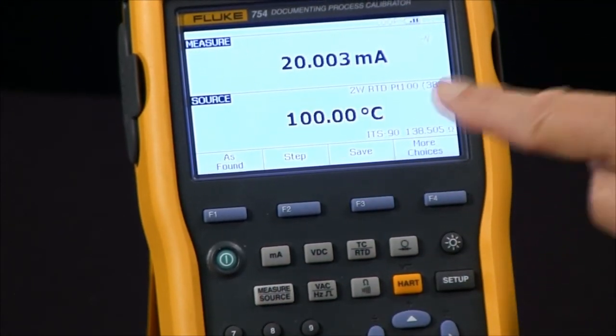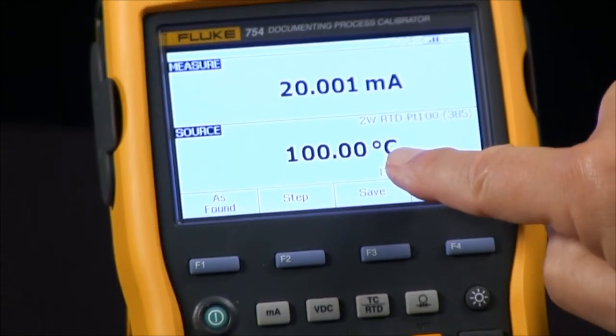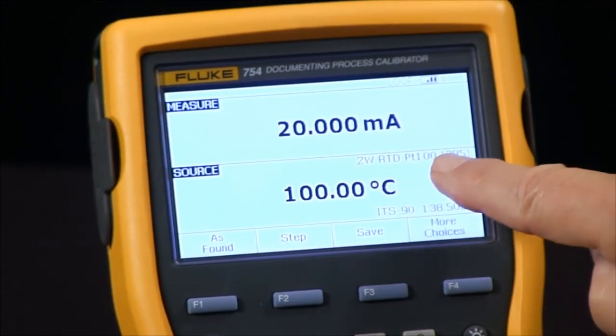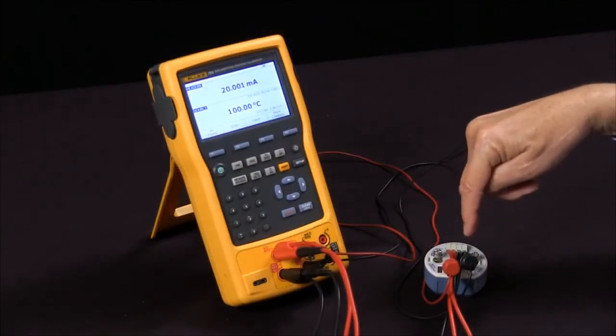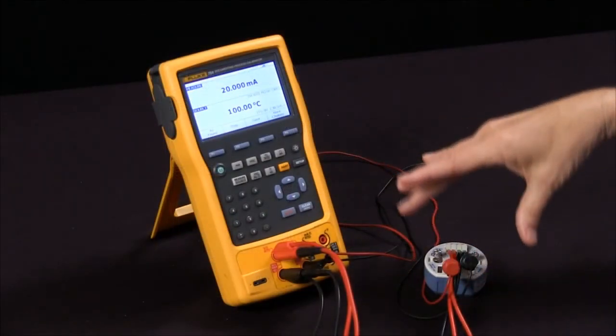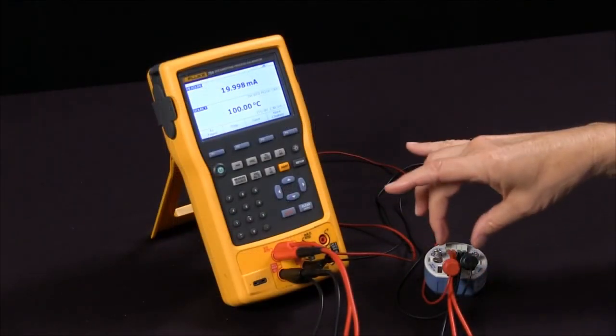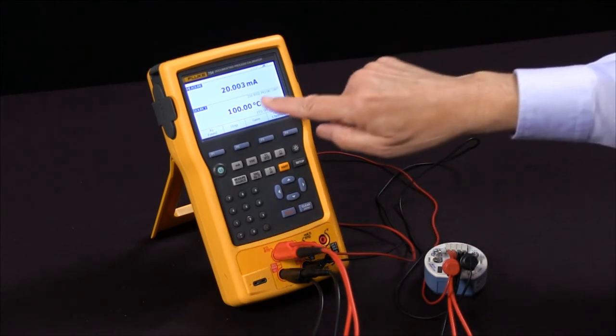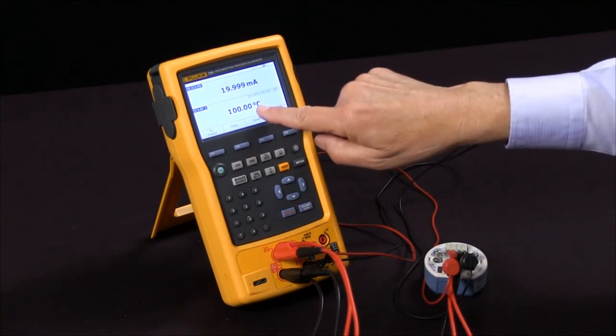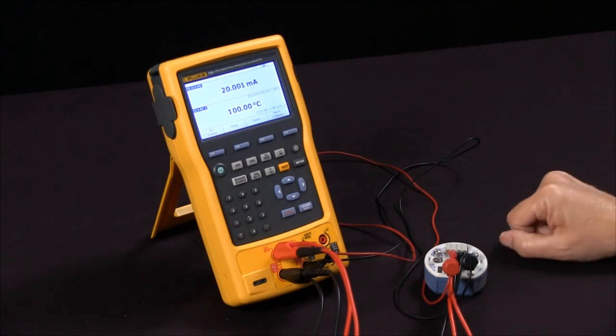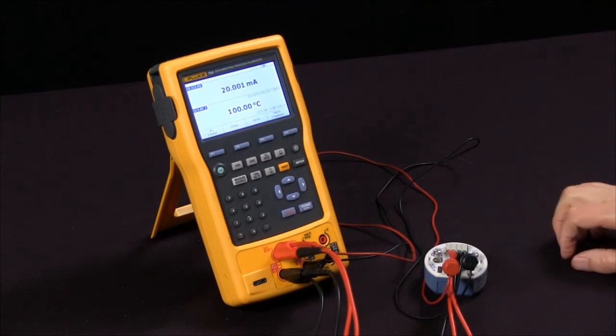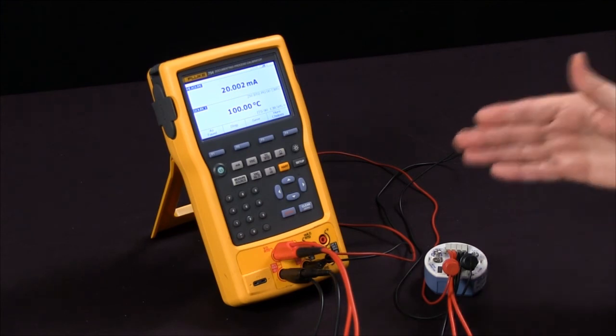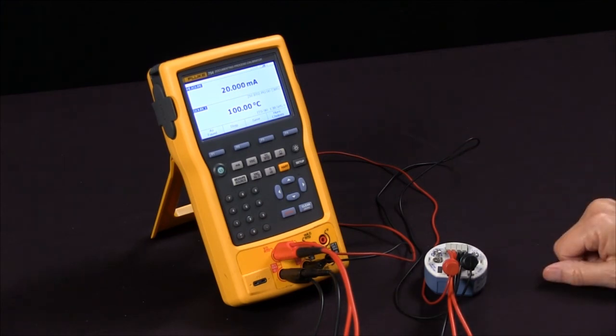I'm simulating an RTD, a very accurate RTD to the transmitter, and it's reading 100 degrees C as it should be. And that's how we source an RTD to a device that we're trying to simulate an RTD for.